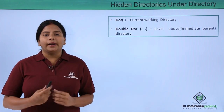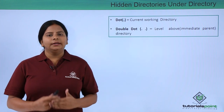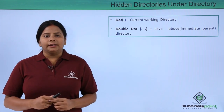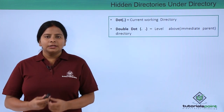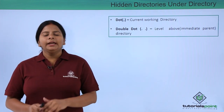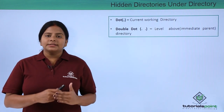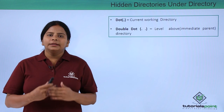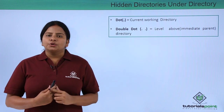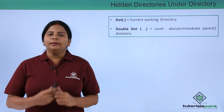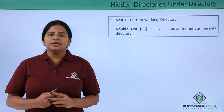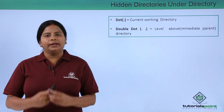By default, a dot and double dot get created when you create a directory in the Linux operating system. The single dot represents the present directory — for example if I created a directory named abc, that dot is my current directory. The double dot represents the immediate parent directory; if abc was created inside /mnt, then /mnt is my parent directory. These are the two hidden folders generally found in every directory.